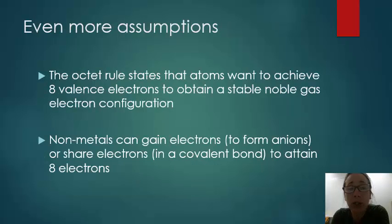The Lewis dot structure is really based on the octet rule, which states that atoms want to achieve eight valence electrons to obtain a stable noble gas configuration. Remember the filled S and P subshell, two plus six equals eight. Non-metals can gain electrons to form anions, or they can share electrons in a covalent bond to attain these eight electrons.